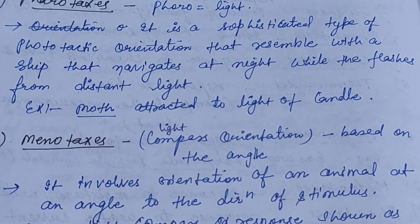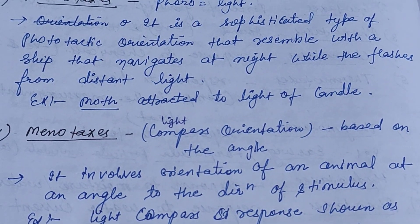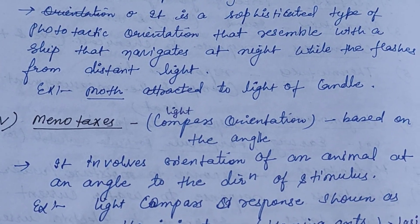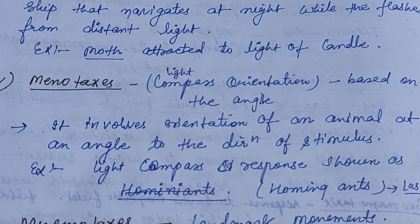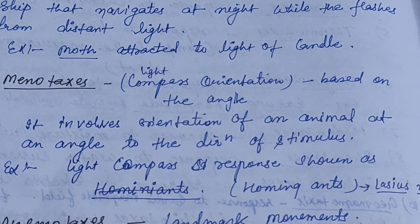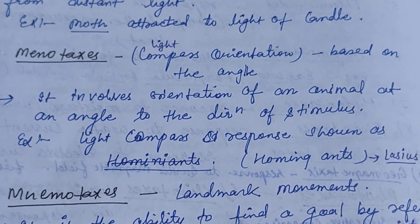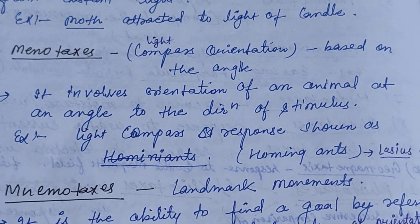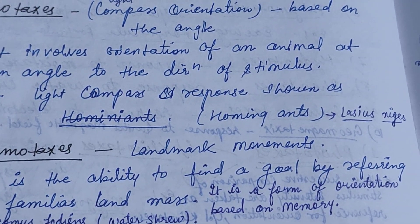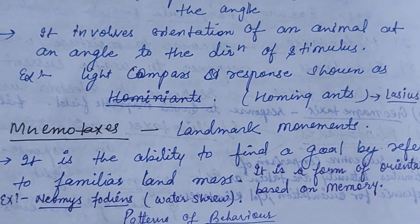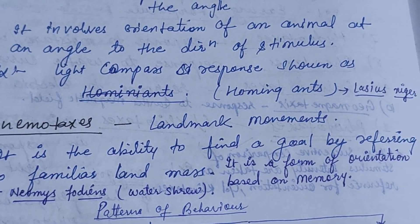Ferrotaxis — 'ferro' means light. It is a sophisticated type of phototactic orientation that resembles a ship navigating at night using flashes from a distant light. Example: moths are attracted to the light of a candle. Menotaxis is a light-compass orientation based on angle; it involves the orientation of an organism at an angle to the direction of the stimulus. Example: light-compass response shown in homing in Lasius niger.